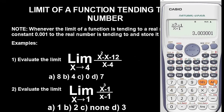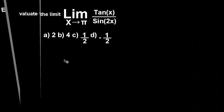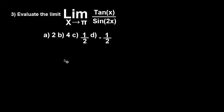We are now going to solve a different version of this kind of question. Example three says: evaluate the limit as x tends to π, where the numerator is tan x and the denominator is sin 2x. Let's bring the calculator and solve this problem together.